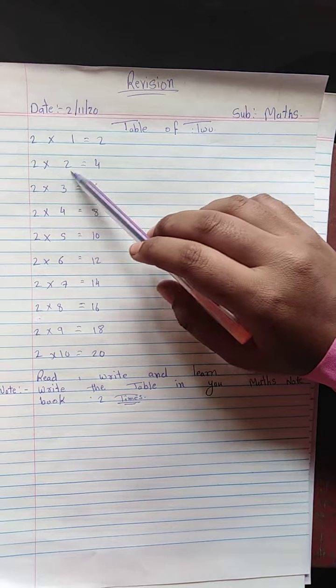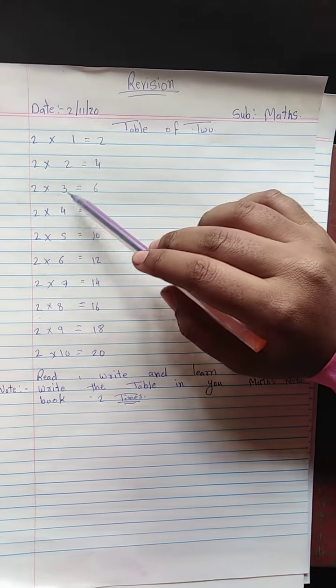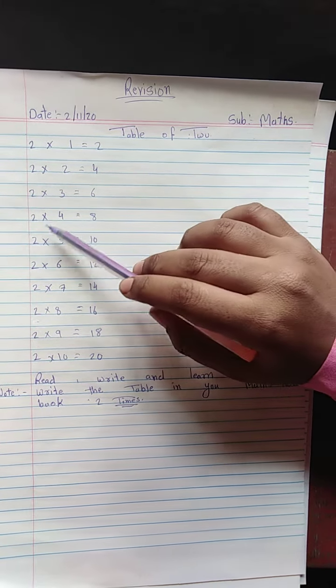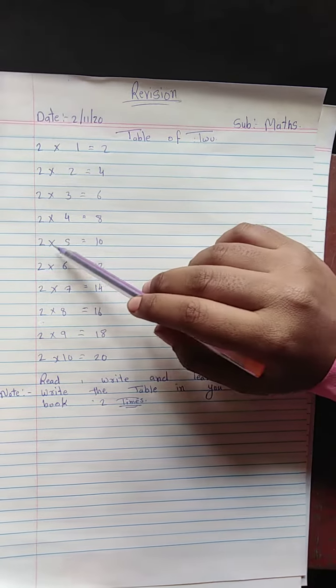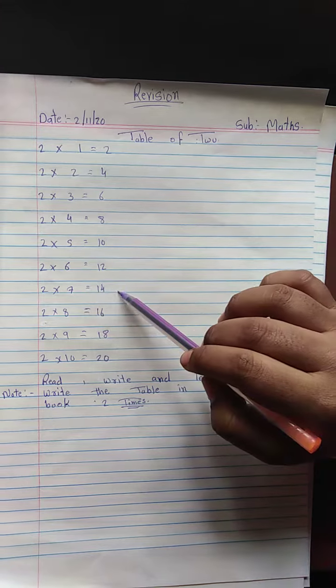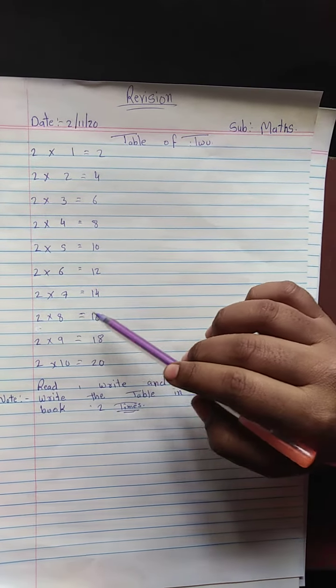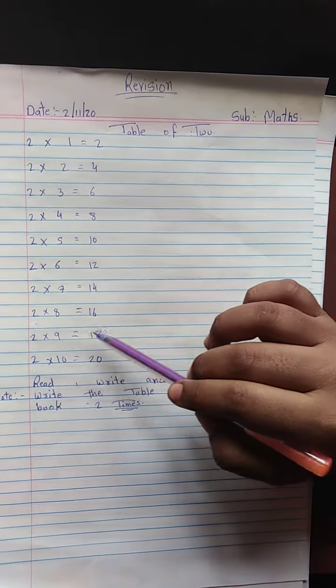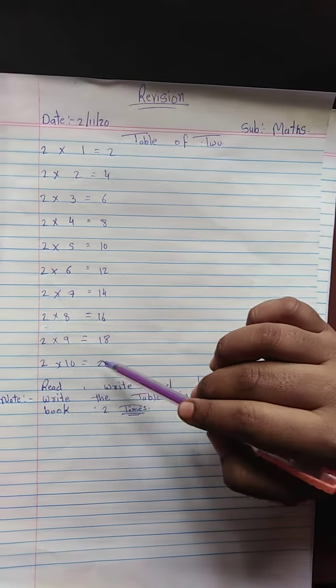2 times 1 is 2. 2 twos are 4. 2 threes are 6. 2 fours are 8. 2 fives are 10. 2 sixes are 12. 2 sevens are 14. 2 eights are 16. 2 nines are 18. 2 tens are 20.